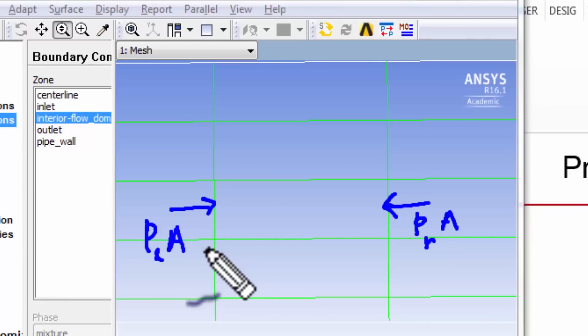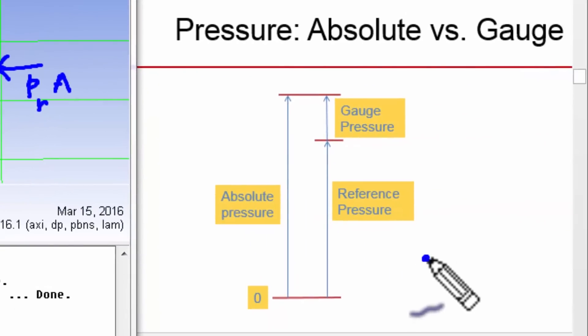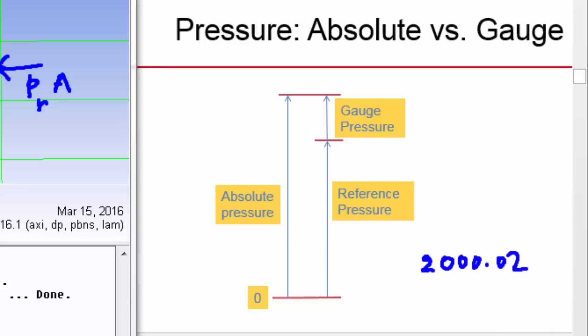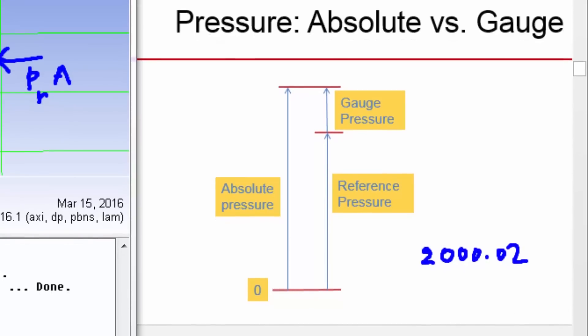As an analogy, let's say on the left face, the pressure force is, say, 2000.02 in whatever units. And if your computer, let's say, has only a precision of four digits, that's going to be rounded off to 2000. And on the right face, let's say it's 2000.01.